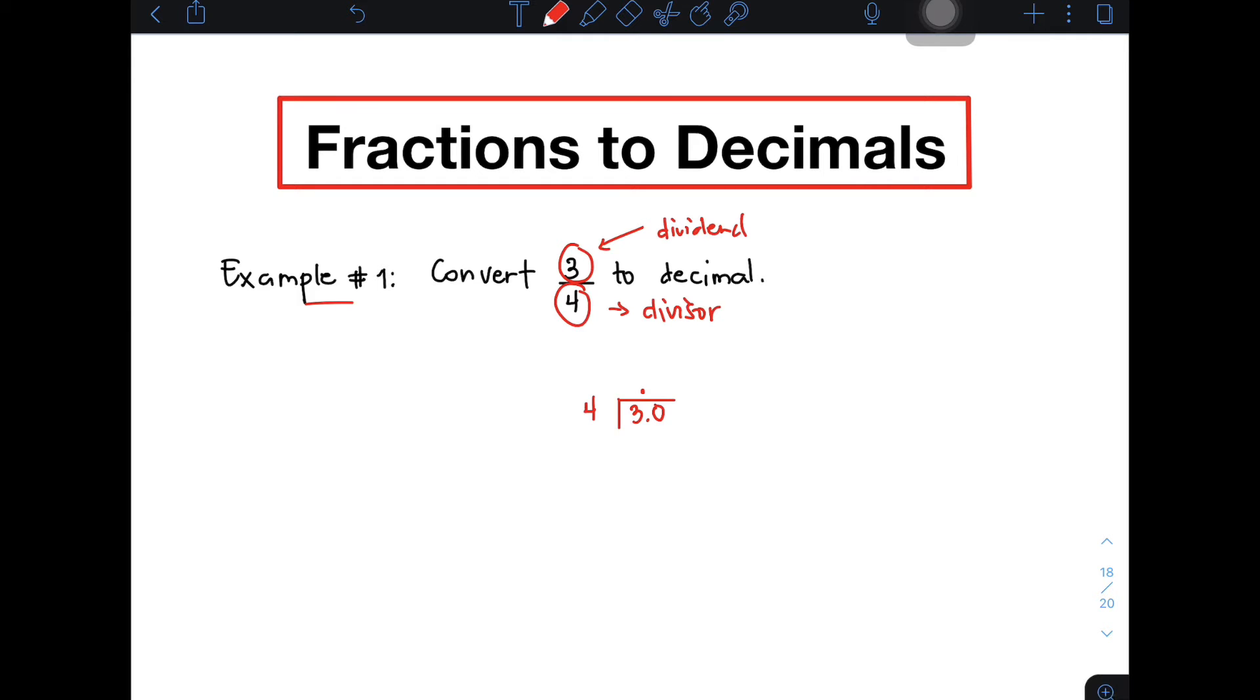So 30 divided by 4, that will give you how many? 7. Then 7 times 4, that will give you 28. Subtract that, that is equal to 2.